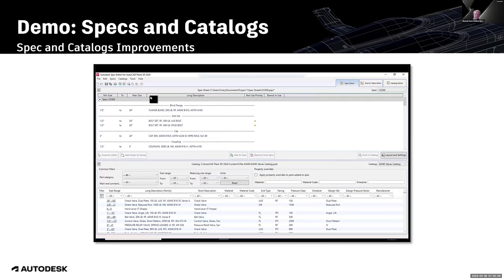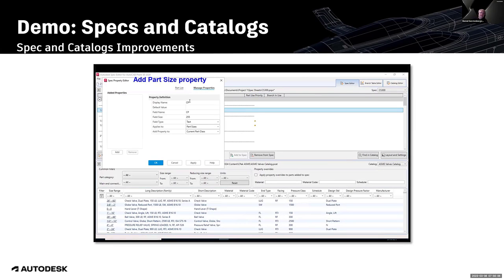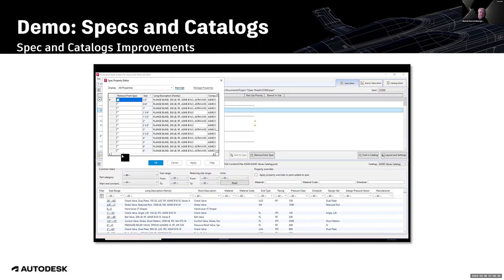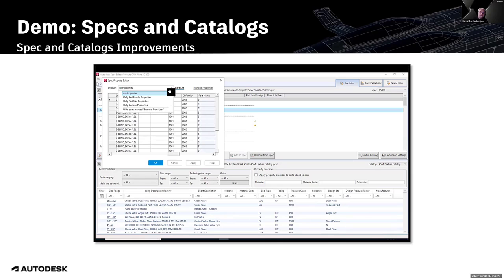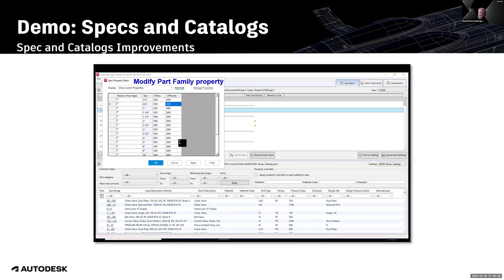Here is a short video showing the enhancements. Opening the property editor and creating two new properties: the first one called 'CP size' (custom property size) with 'applies to' set to part sizes, and the second one called 'CP family' with 'applies to' set to part families. Switching to the filter for custom properties, you can see both properties listed. For CP size, values can be changed or modified size by size separately.